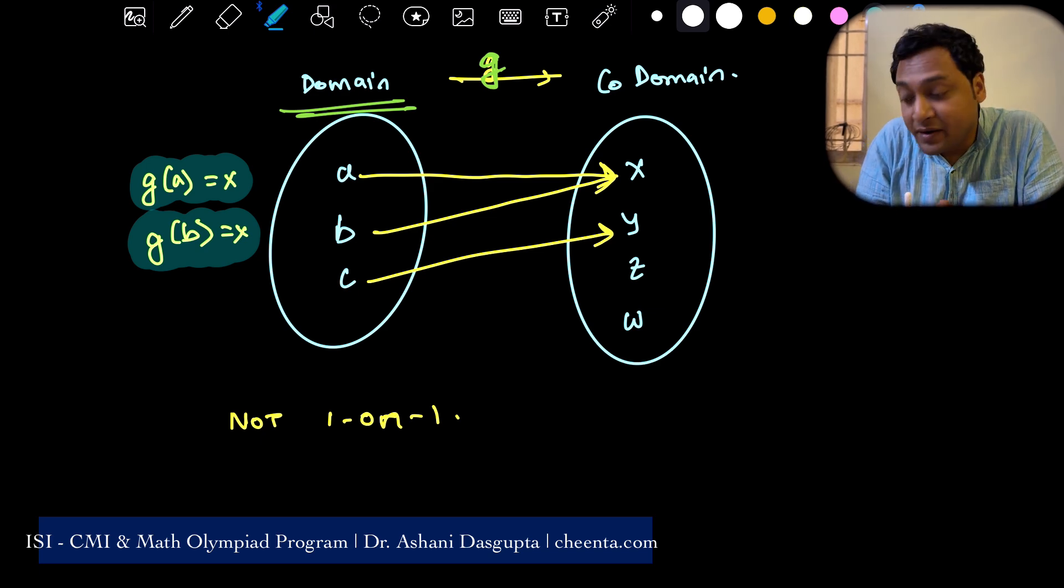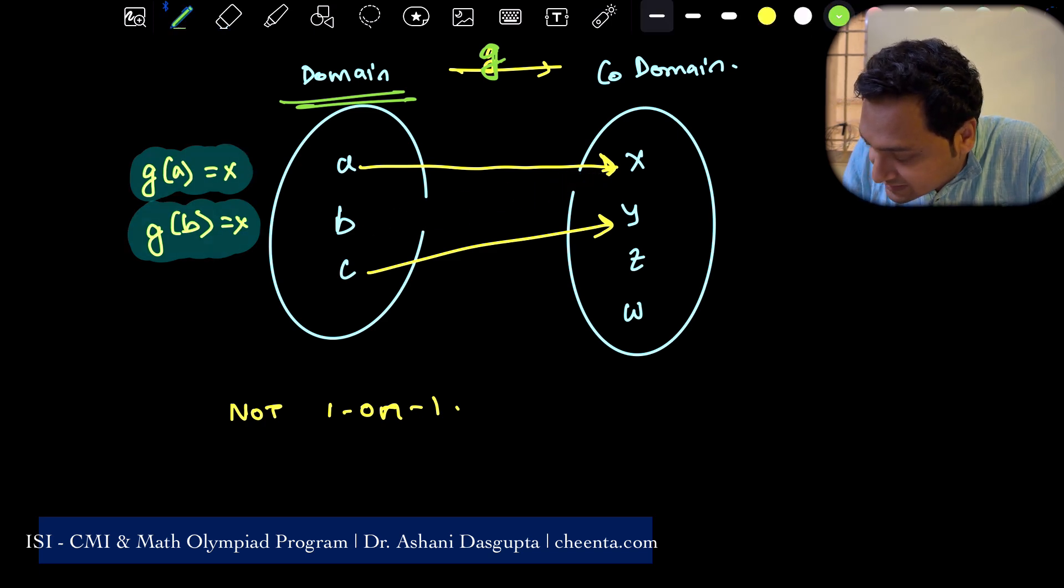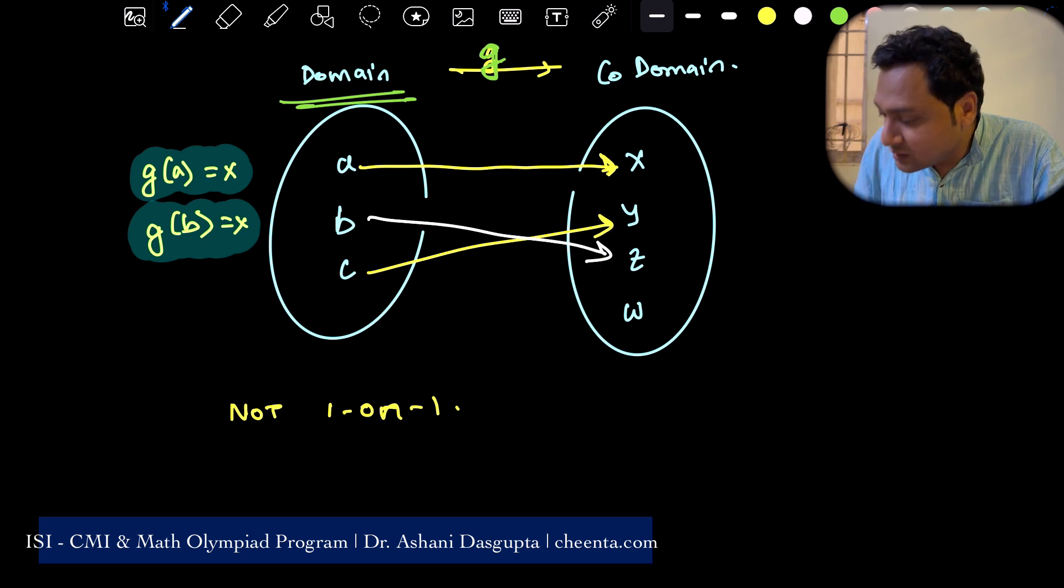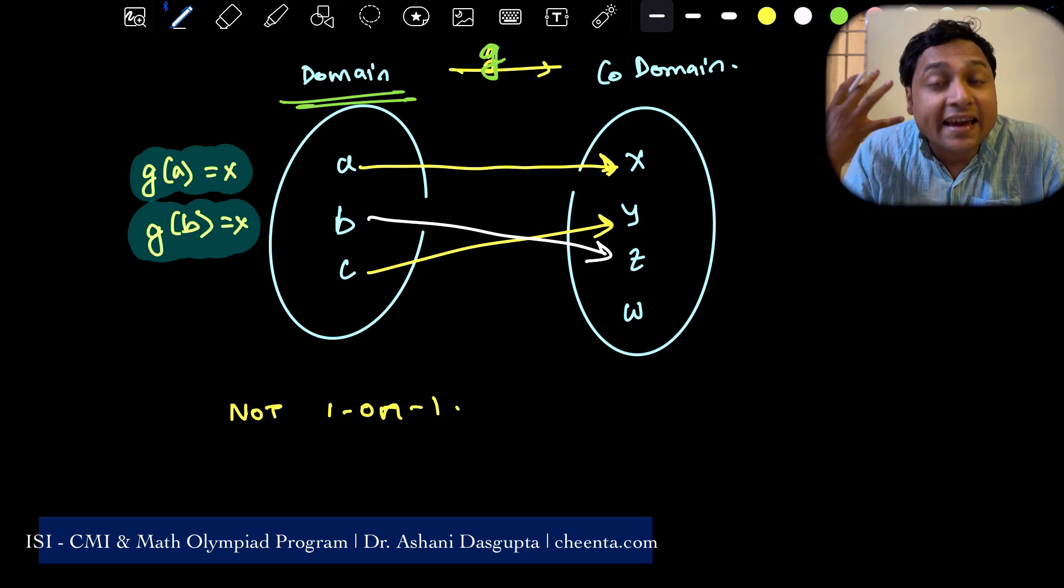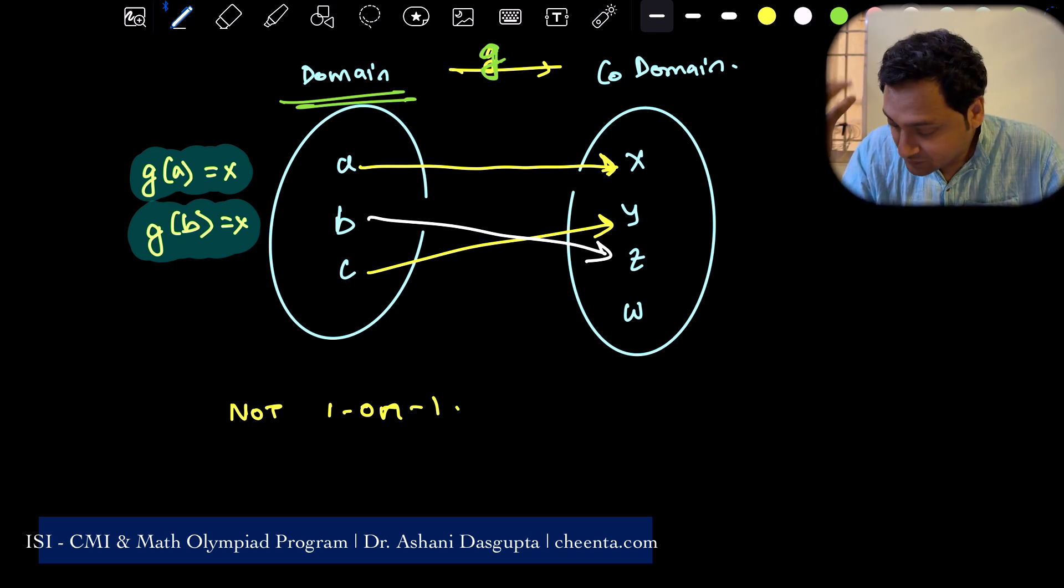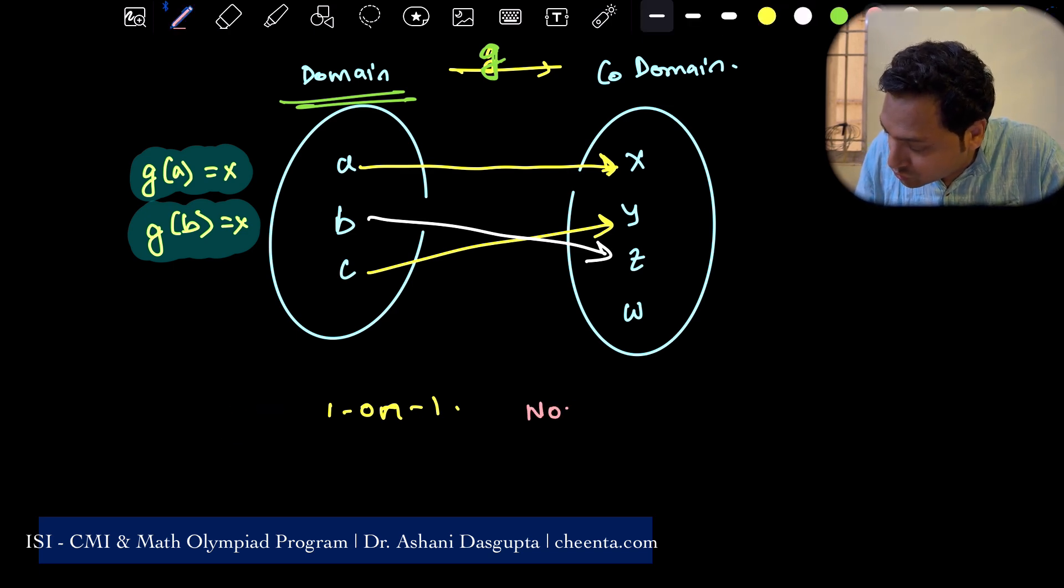Everything should go to separate places. So I can make this function one to one by changing it. Let's say if b goes to z. Now a goes to x, b goes to z, c goes to y. In this situation, the function is one to one. But it is not onto. This is onto one. But let me write it not onto.